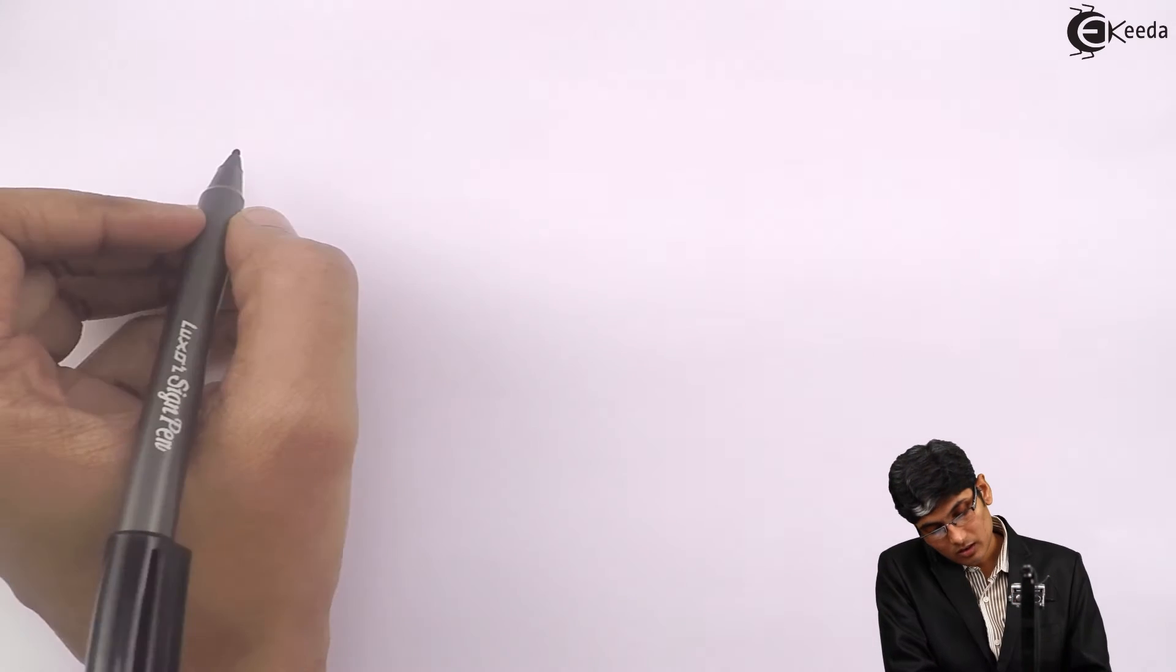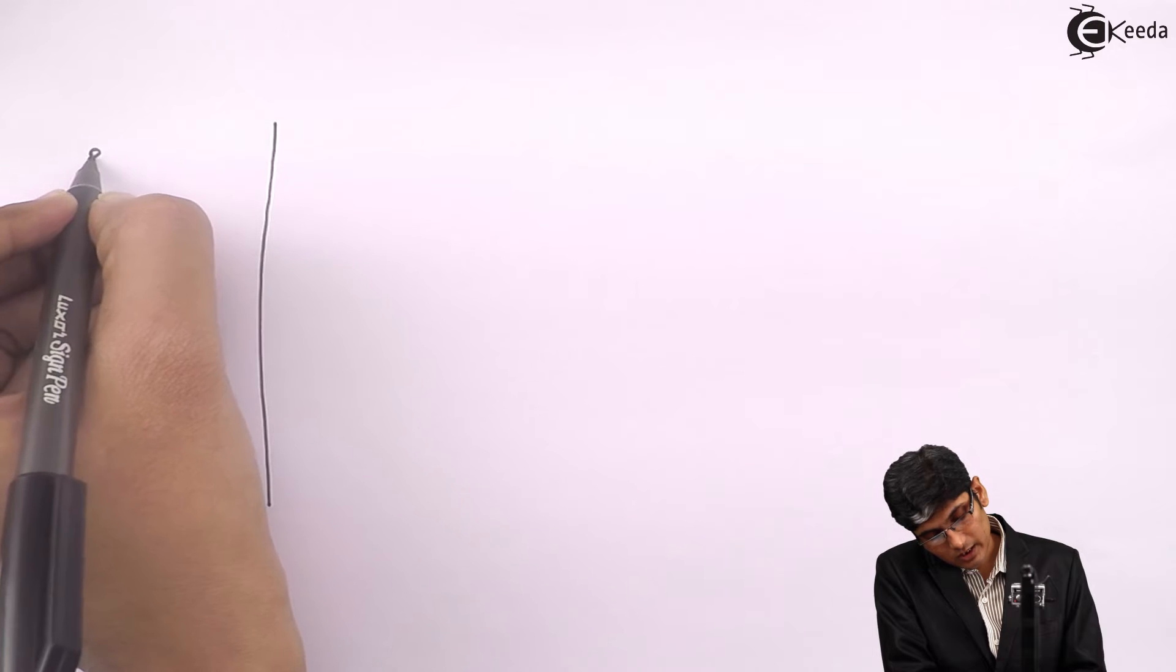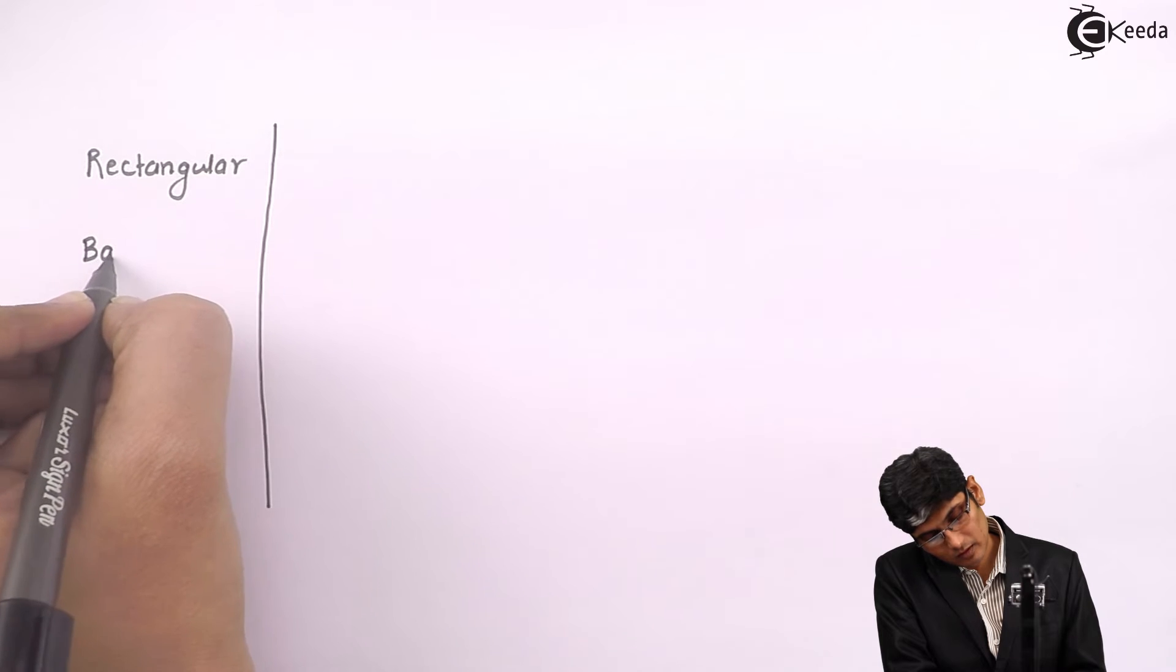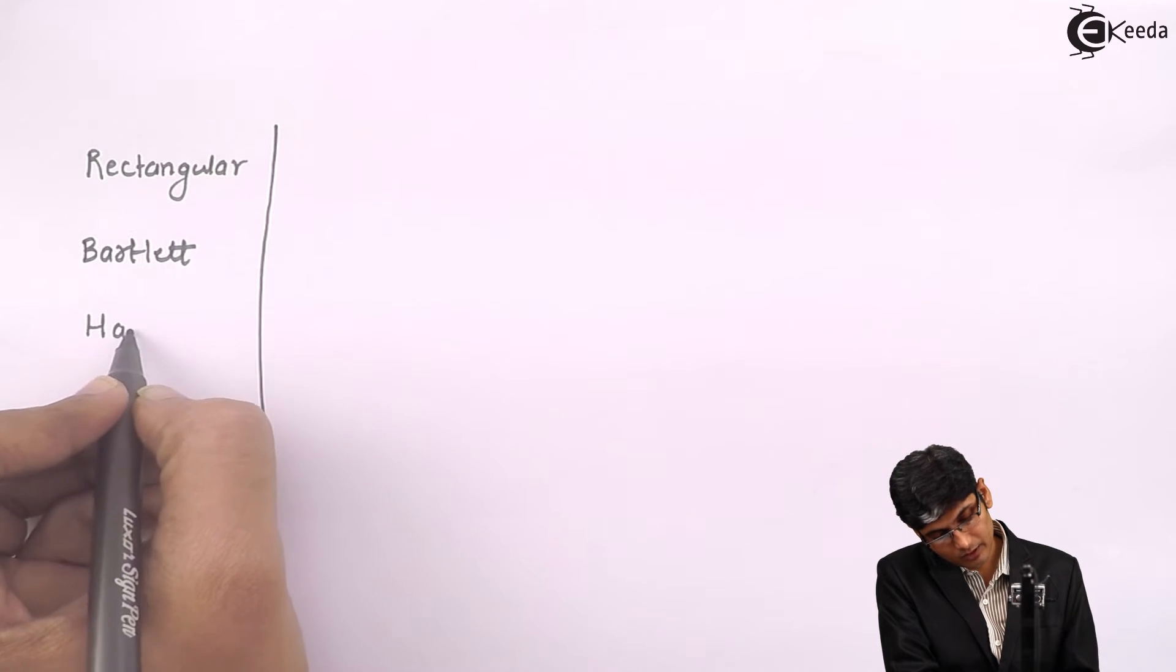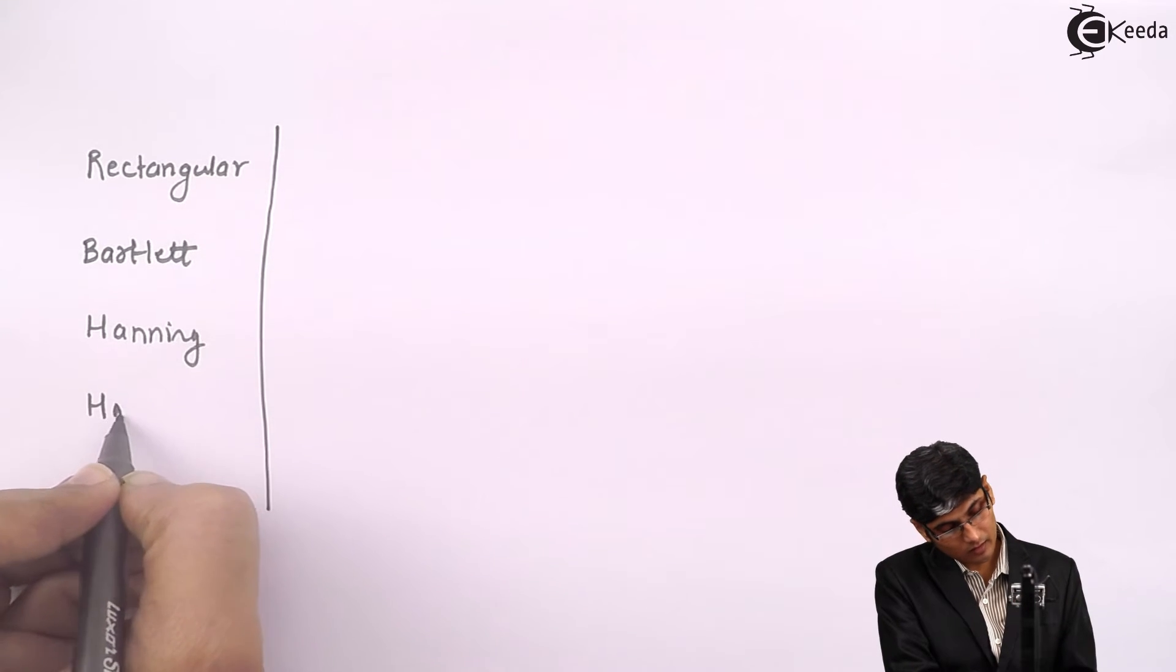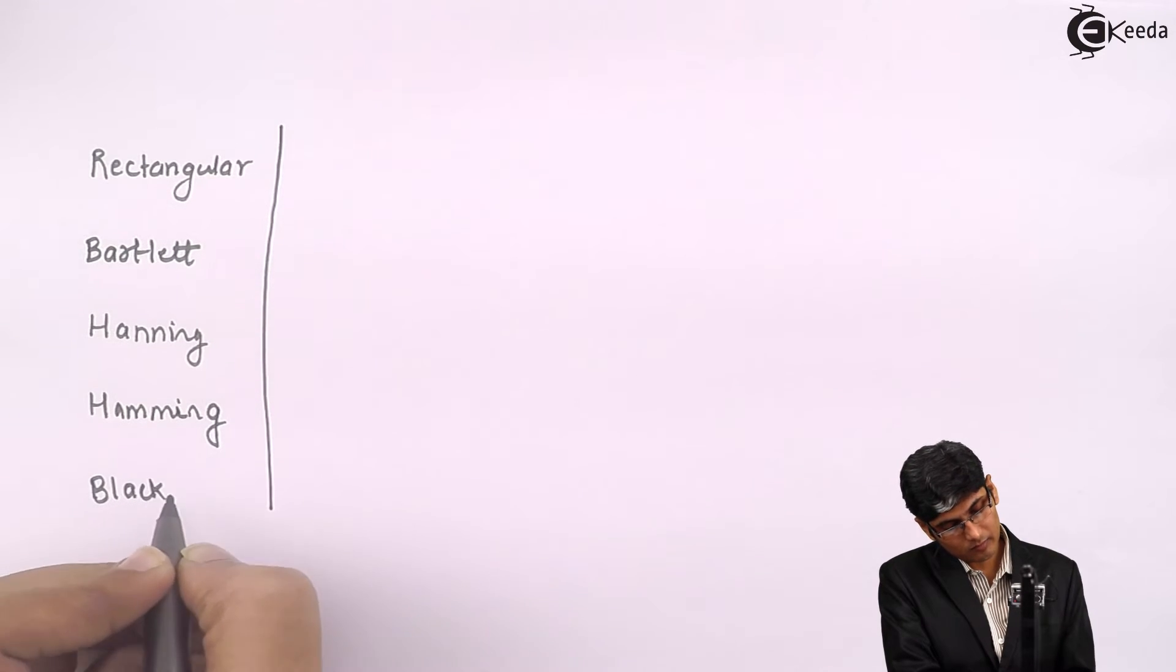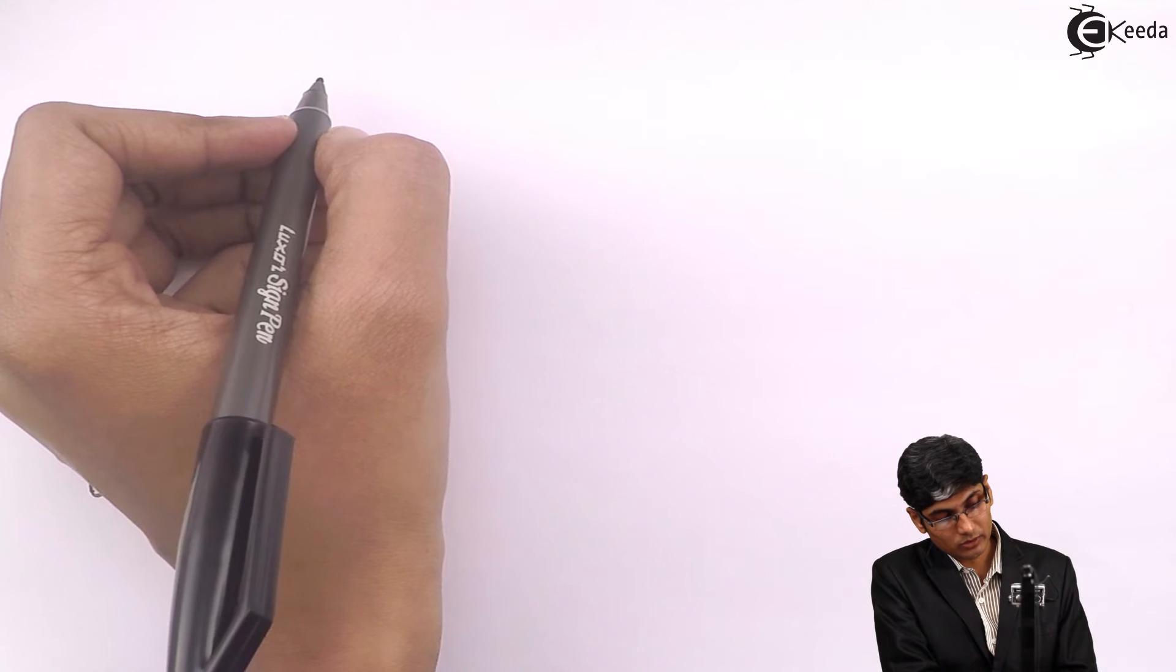Let us jot down their characteristics. We will be putting our five windows together. So let's say I have a rectangular window, then Bartlett window, then Hanning window, then Hamming window, and finally the Blackman window. The first characteristic that I am going to write is the transition width.